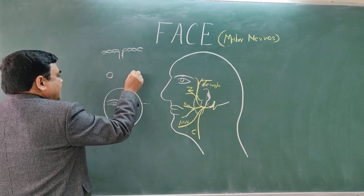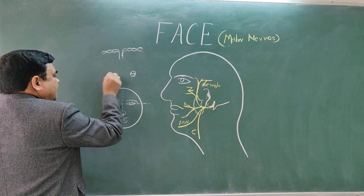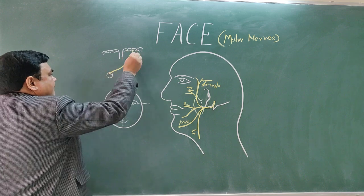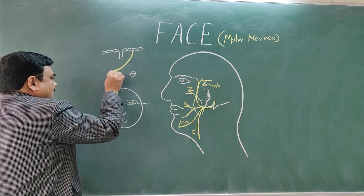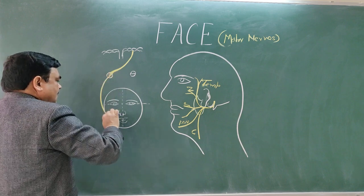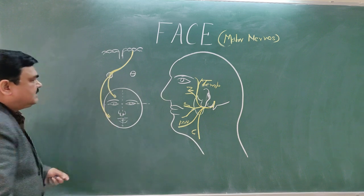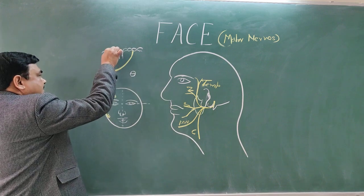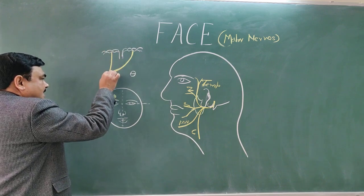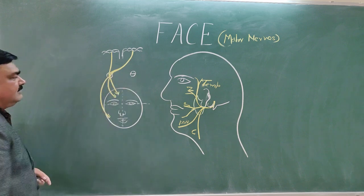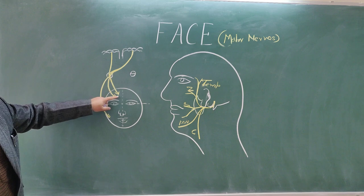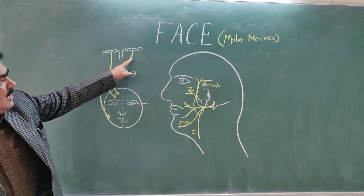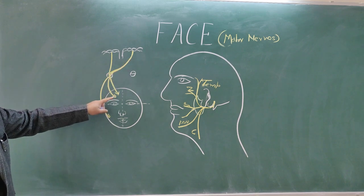Here is the facial nucleus. Like the seventh nerve, the face is supplied here. Here are the supranuclear fibers. These supranuclear fibers give supply to the upper and lower part of the opposite side of the face. The same-side fibers give supply to the upper part of the face on the same side, and the crossed fibers give supply to the upper and lower part of the opposite side.